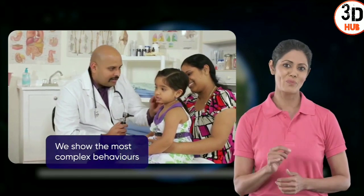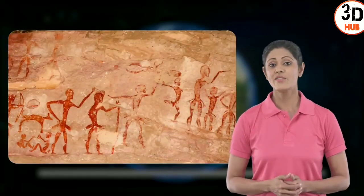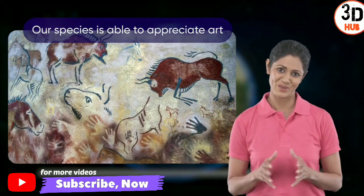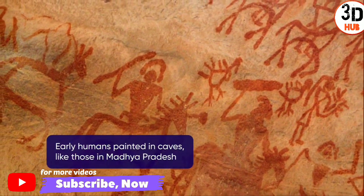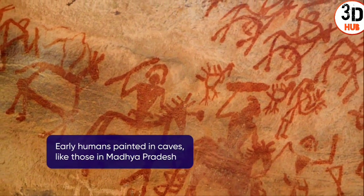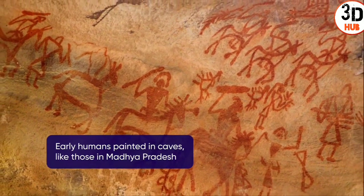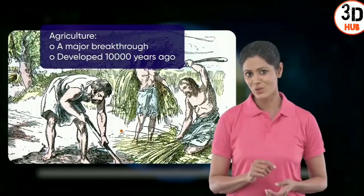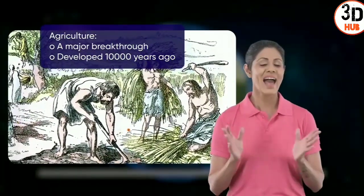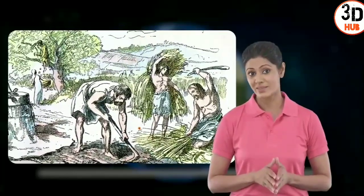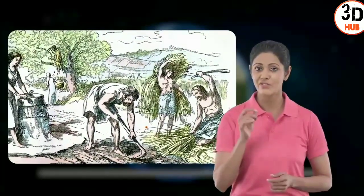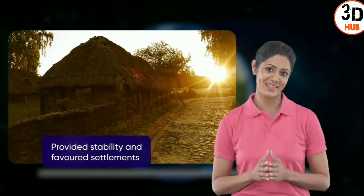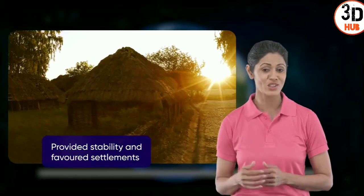After all, our species has the most complex behaviors. We developed an interest in art and other forms of abstract expression — some prehistoric paintings date back to 18,000 years ago, like those seen in the Raisen district of Madhya Pradesh. And around 10,000 years ago, we also developed agriculture. This was huge because we could settle in favorable locations and plant crops, essentially kick-starting human settlements and civilization itself.